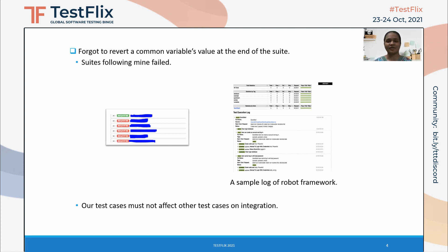On debugging, I found out that the issue was because of this common variable, and I fixed it. Robot Framework's log file was very helpful in debugging this issue. On execution, Robot Framework generates log files which provide detailed information on the test cases that we write. We can understand where we have gone wrong by looking at these log files. Therefore, we need to ensure that the test cases we write do not affect other testers' test cases on integration.